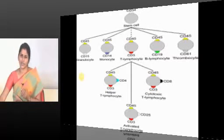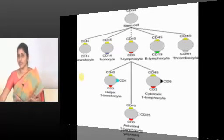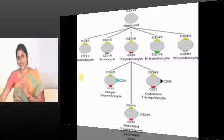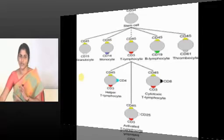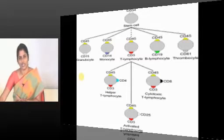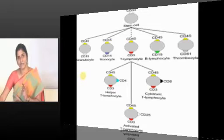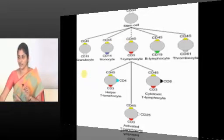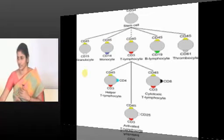Burkitt lymphoma is one of the worst tumors in the human body — it is the fastest growing human tumor. The prognosis is really bad, but if such a tumor expresses CD10, the tumor is going to have a better prognosis.